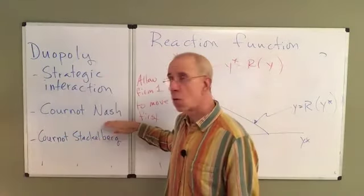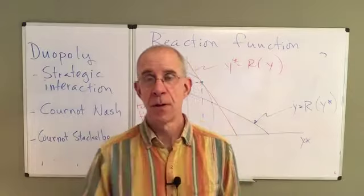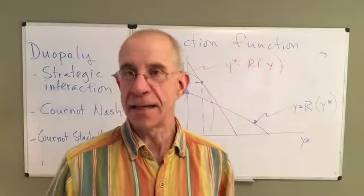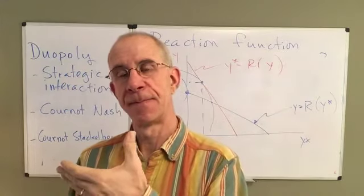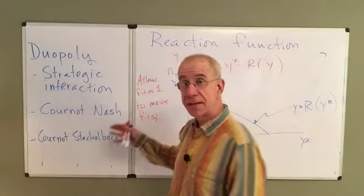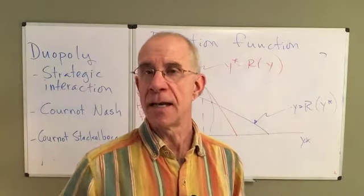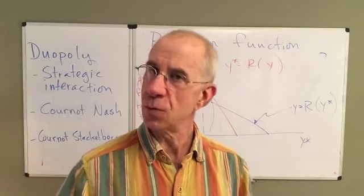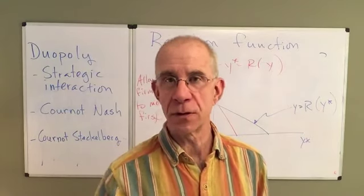It's still not as good as the monopoly level of output, but given that the rival is going to be there, this is the best that firm one can do. So we've talked about the Cournot-Nash non-cooperative outcome, where both firms move at the same time, and also the Cournot-Stackelberg outcome, where one firm gets to move first and take the high ground. In another video, we're going to talk about a different behavioral assumption — instead of firms first deciding how much to produce and letting prices adjust, we'll allow firms to choose their prices and let quantities adjust. Those outcomes are quite distinct and important to understand.